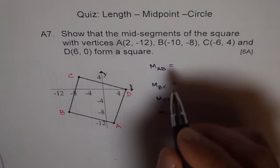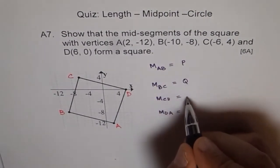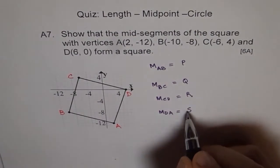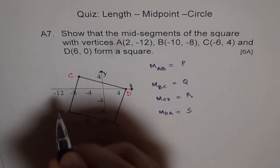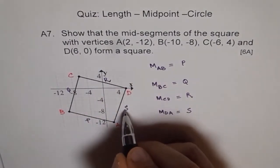Let us say the midpoints we call them P, Q, R, S. Let us say this is P, this is Q, this is R, and this is S. Let me write here P, Q, R, and S.